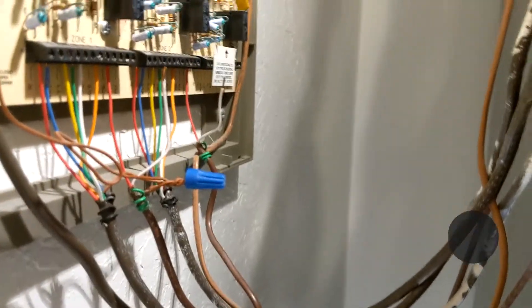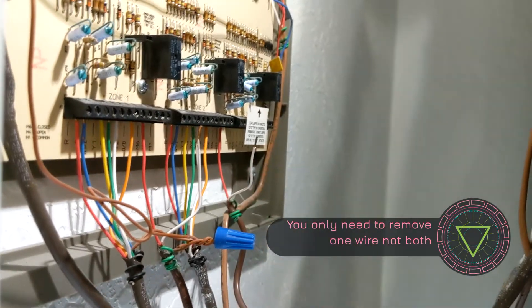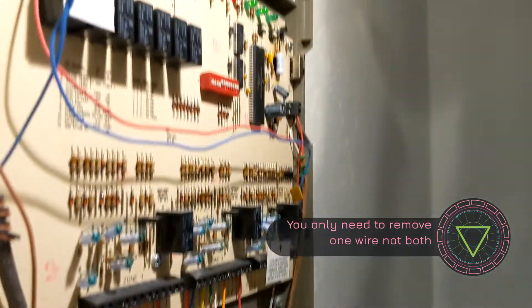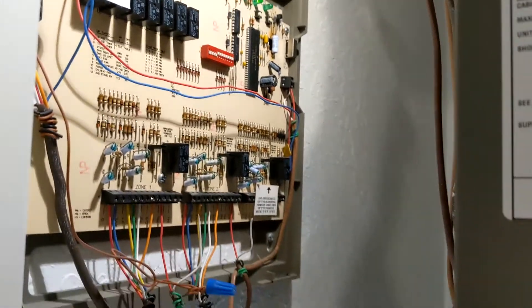...pull those out as well. So that's why you see these two wires coming out. Basically, there's no power to the damper, so the damper will be open fully no matter what zone is lit up. That's going to help us bypass that zone.